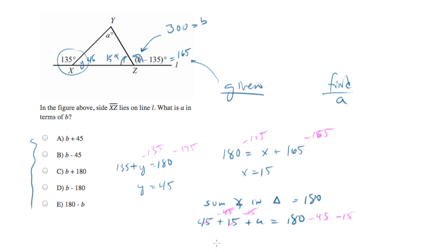Now, we're not done, because we assumed that B was 300. So now what we have to do is plug 300 into each of these answer choices and figure out which one equals 120.